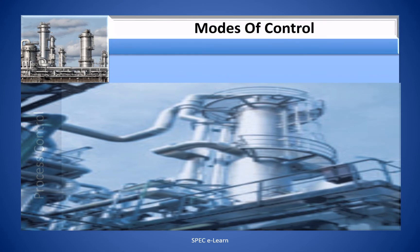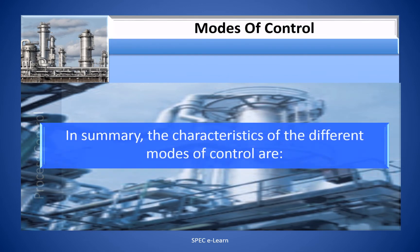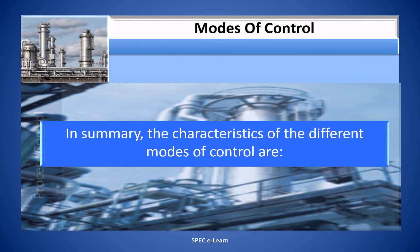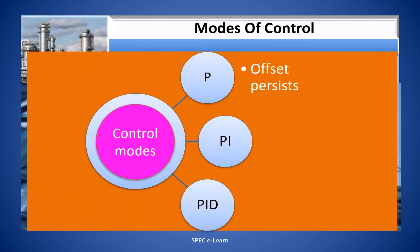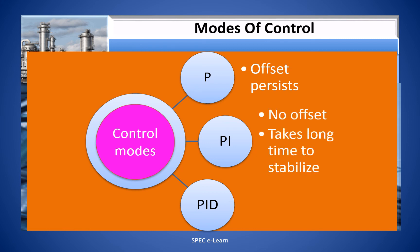In summary, the characteristics of the different modes of control are: 1. Proportional mode — offset persists. 2. Proportional Integral mode — offset eliminated but takes long time to stabilize. 3. PID mode — no offset and faster response to error.